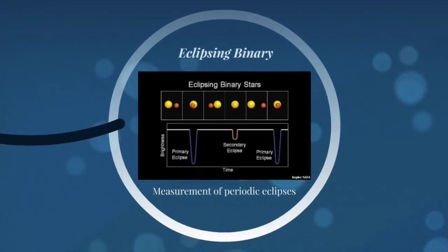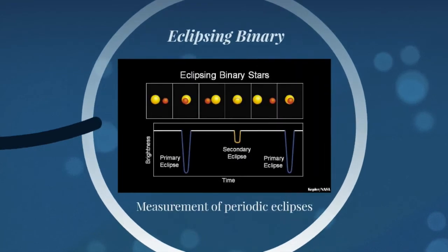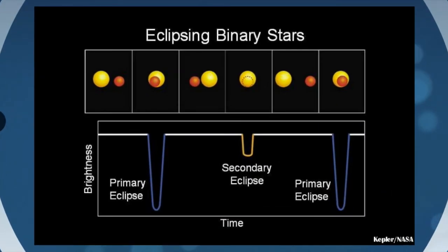Another type of binary is an eclipsing binary. And here, we can measure periodic eclipses. So if we look at eclipsing binaries, one star passes between us and the other star. And when the small star is in front of the brighter star, it dims. And we get a small dip in our brightness.